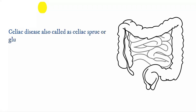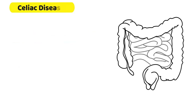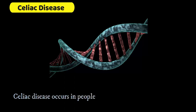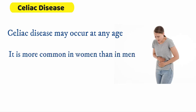Celiac disease, also called Celiac Sprue or Gluten Sensitive Enteropathy, is an autoimmune disease that mainly affects the small intestine. It occurs in people who are genetically predisposed. Celiac disease may occur at any age and is more common in women than in men.